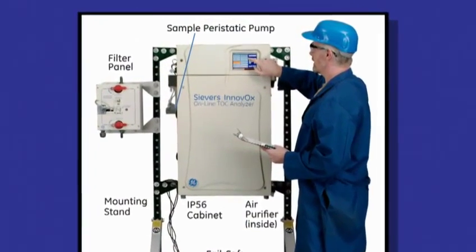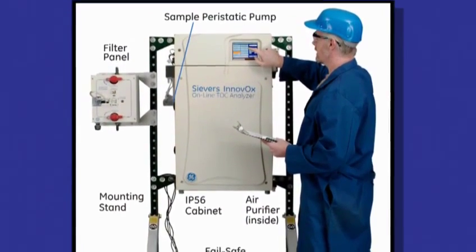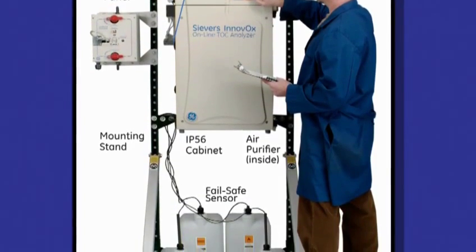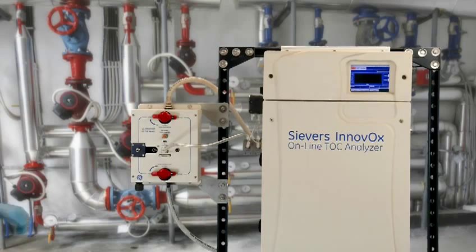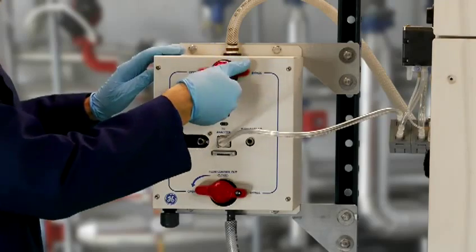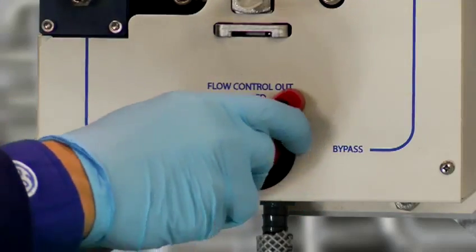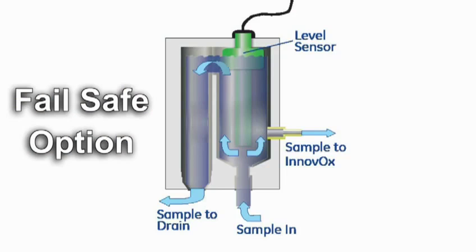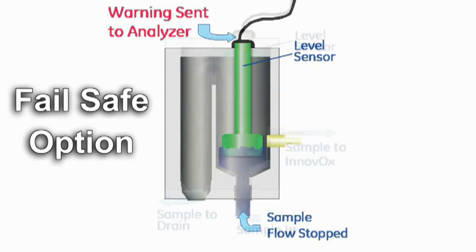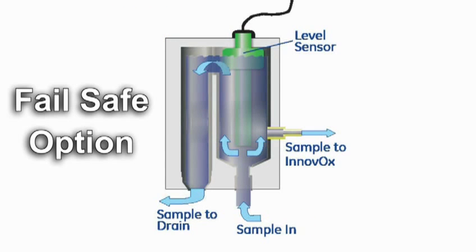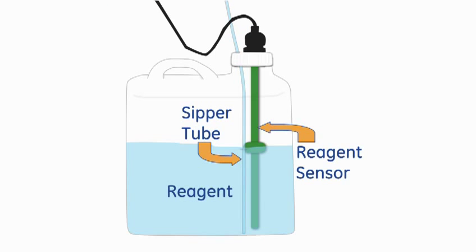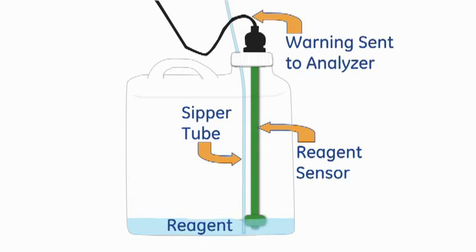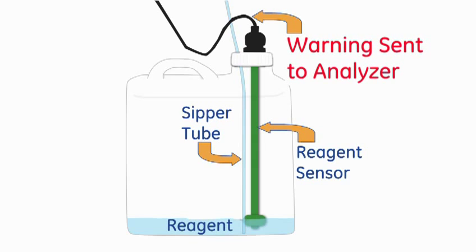We understand that no two waste streams are the same, so we offer various accessories to customize the Innovox for your application. For applications that include suspended solids, the filter panel should be used — it removes large particles before sample analysis and is self-cleaning. The Failsafe option monitors the sample stream, placing the analyzer on standby when flow stops and automatically restarting when flow resumes. It also monitors reagents; if reagents are depleted, the Failsafe feature puts the Innovox on standby and alerts you that maintenance is needed.